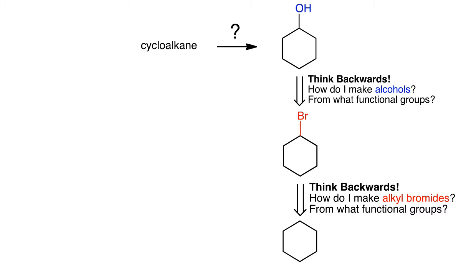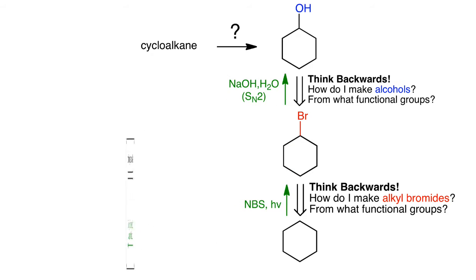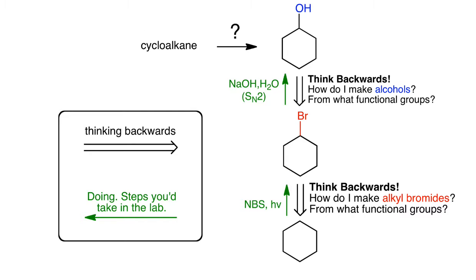After the retrosynthesis, the last step is to figure out what reagents and conditions you need to do the forward steps. Those are shown here in green. To do radical halogenation, I treat cyclohexane with NBS and light, and then just SN1 or SN2 substitution to get me to the alcohol. Notice that we're using two different types of arrows here: a double-lined arrow is retrosynthesis — thinking backwards — while a single-lined arrow represents the doing steps, what you would actually do in the lab. These arrows are always in opposite directions; thinking backwards is always opposite to doing. Be careful not to get those confused.